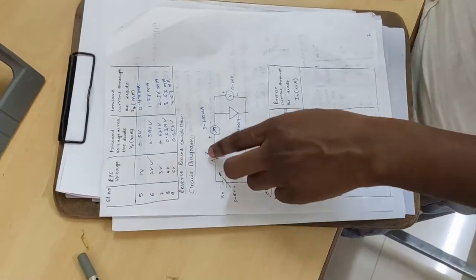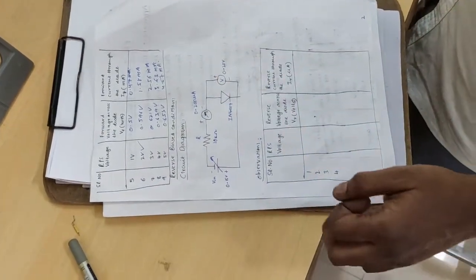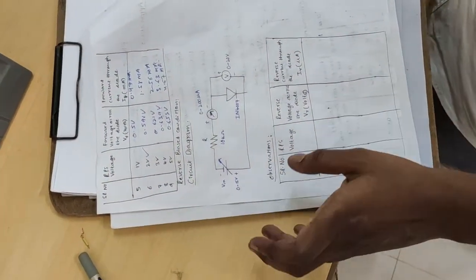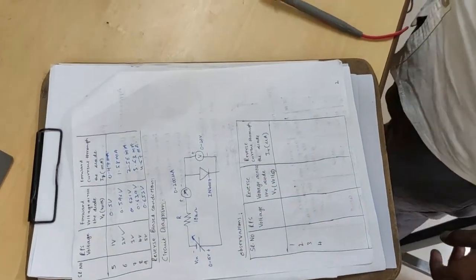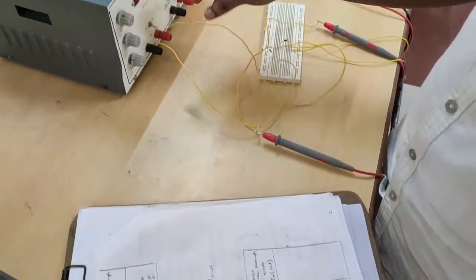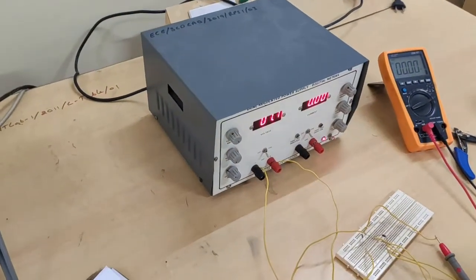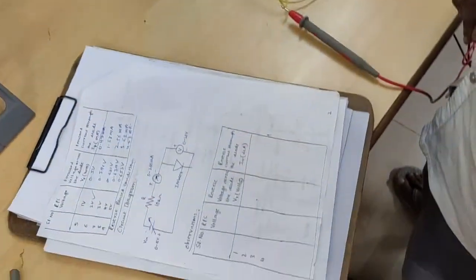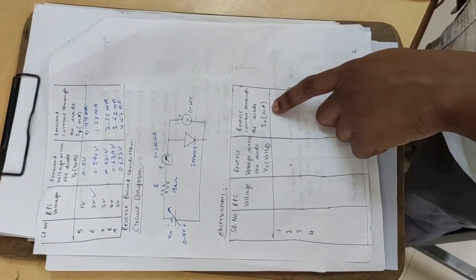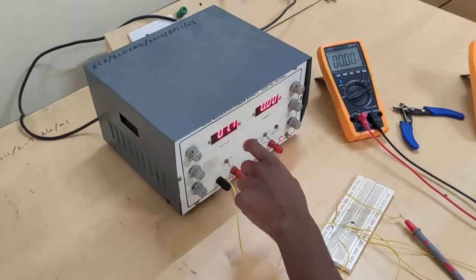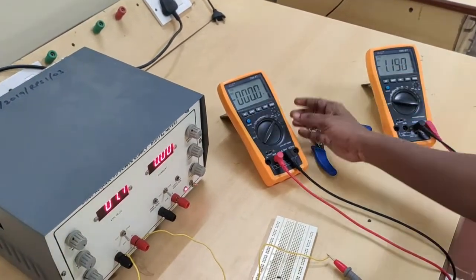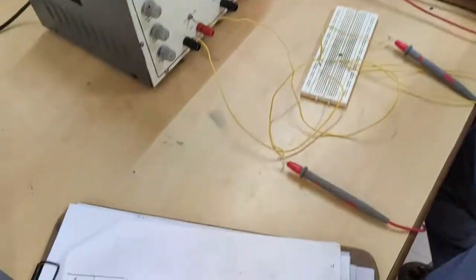This is the circuit diagram for reverse biased condition. In this circuit diagram we are simply interchanging the supply. Connect the circuit as per the circuit diagram with the ammeter and voltmeter. Vary the DRPS voltage in steps of 1V up to 10V and note down the corresponding VR and IR, where IR is in microamps.